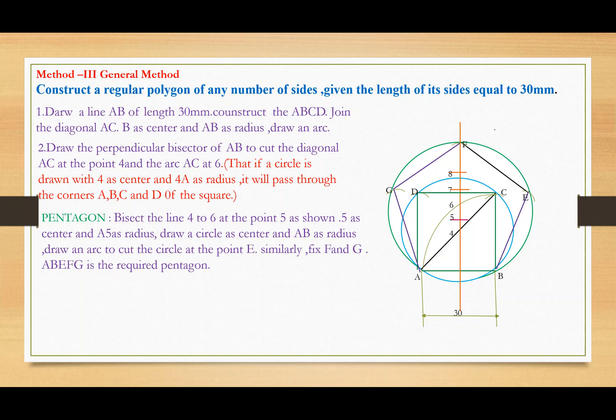The same procedure applies for hexagon, heptagon, octagon, and so on. For hexagon, use 6 as radius with 6 as center to draw a circle.